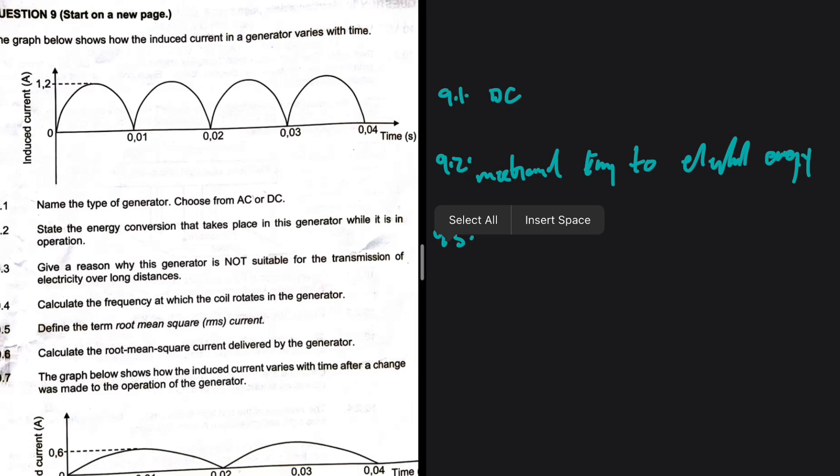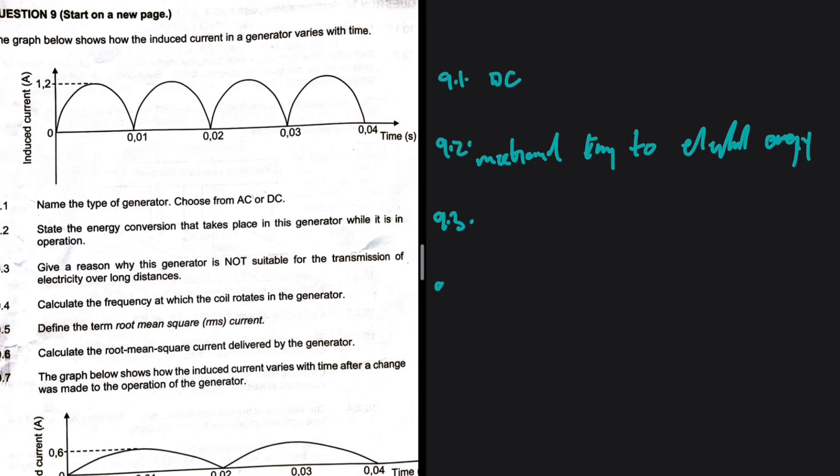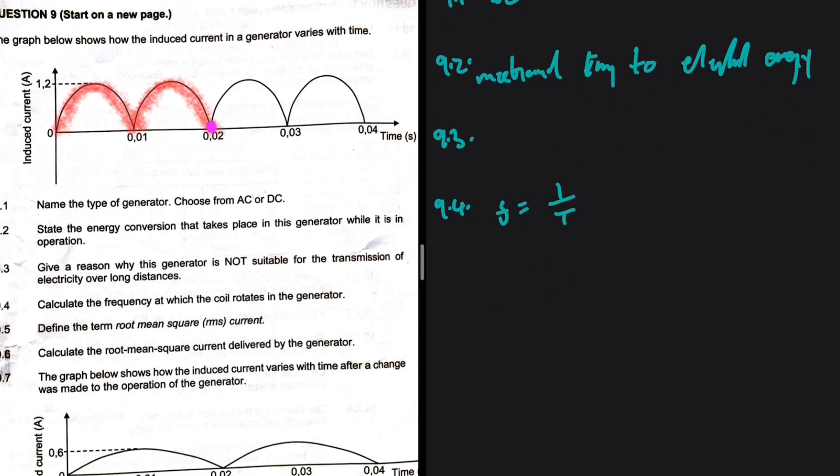9.4: Calculate the frequency at which the coil rotates in the generator. So frequency is equal to 1 over period. What is period? The amount of time it takes to complete one cycle, one wavelength. You can see here that we have a half and then this is another half. So from zero to 0.02, that is a period. We have completed one cycle.